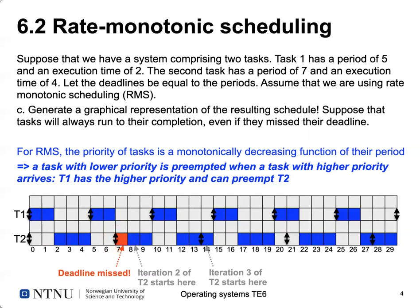So we have a deadline miss, marked in red. T2 requires an additional time unit before it can continue. In the next period it can only execute two time units before switching to T1, then back after T1 finishes, and finally all four time units of T2's second iteration complete. We see a deadline miss in the first case but no further violations after that. To avoid this, we want to ensure utilization stays below the 0.828 bound.